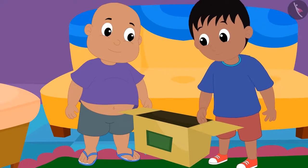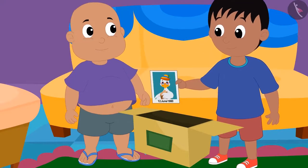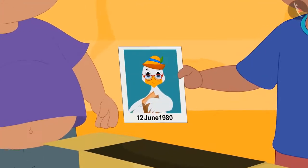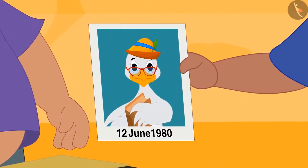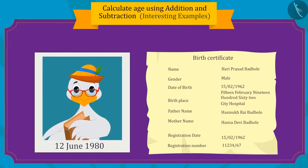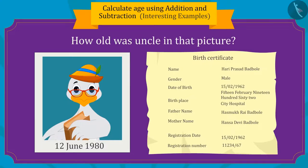Now Raju found another picture of Uncle. In this picture, Uncle is seen at his college. The date written below the college picture is 12th June, 1980. Children, can you tell me how old Uncle was in that picture?